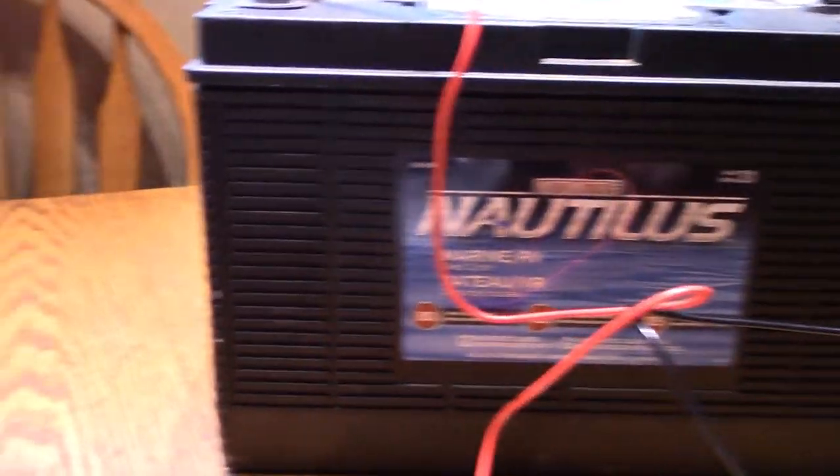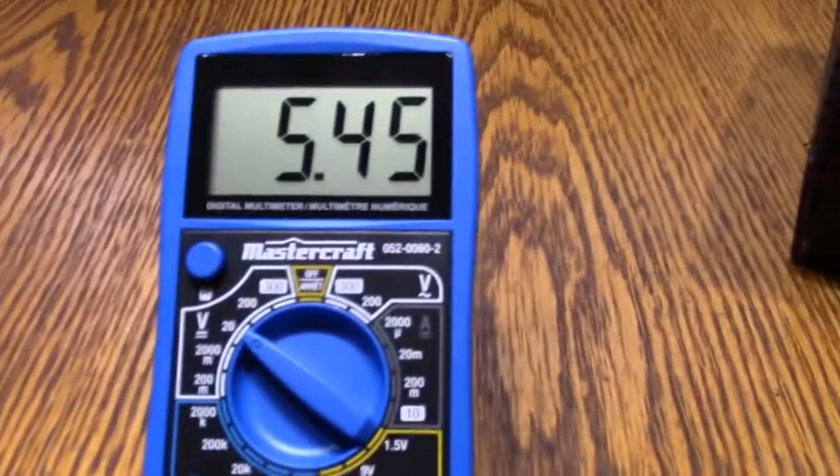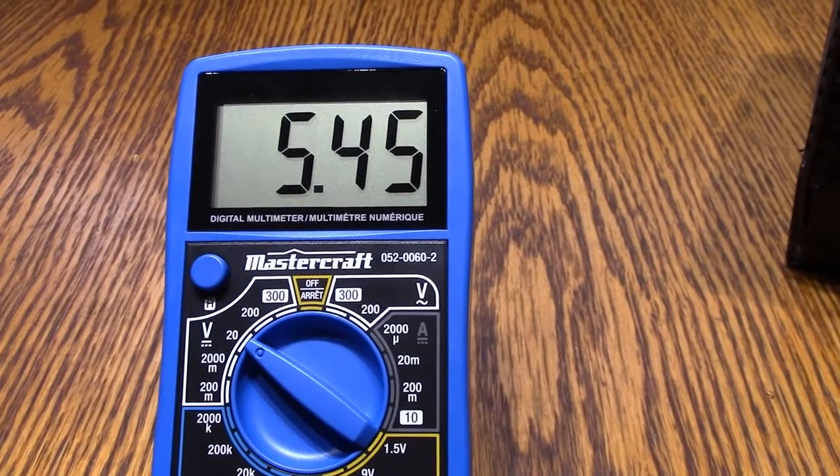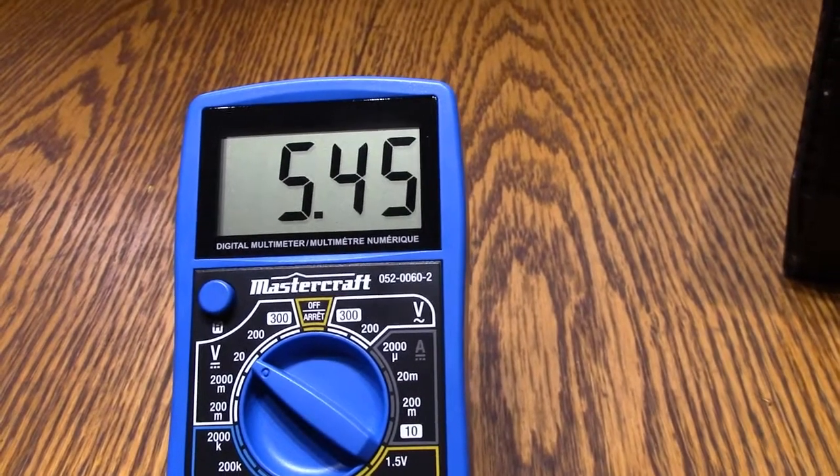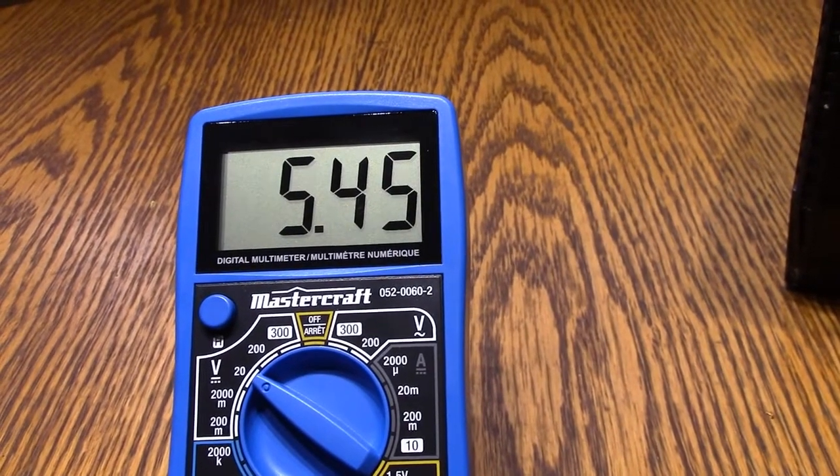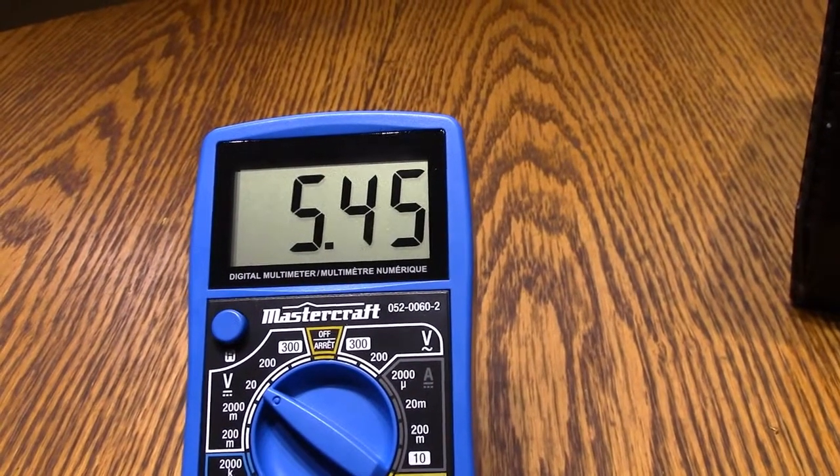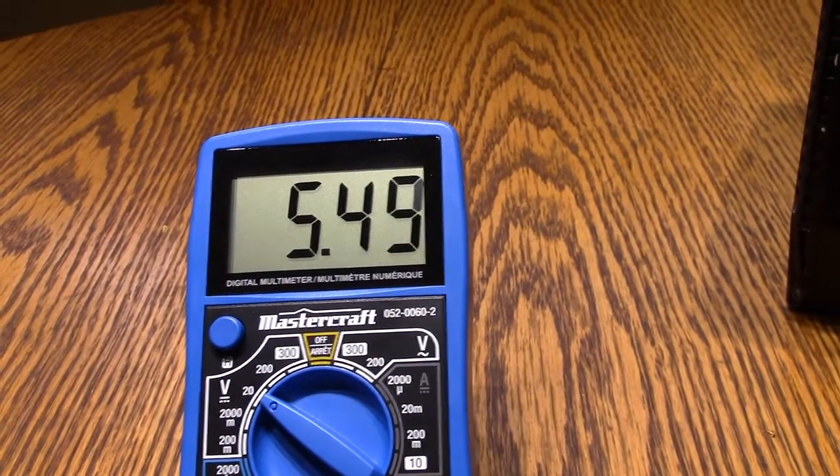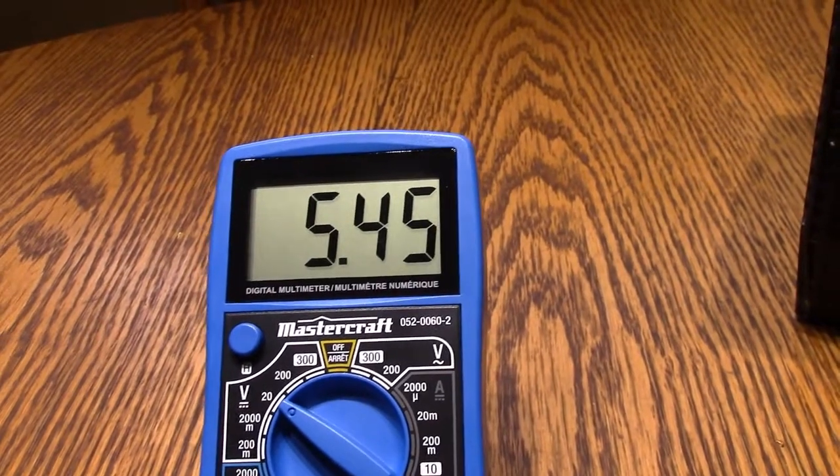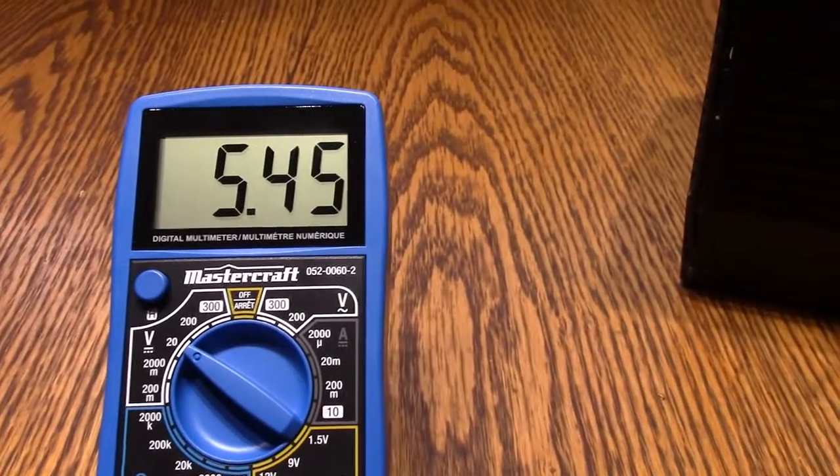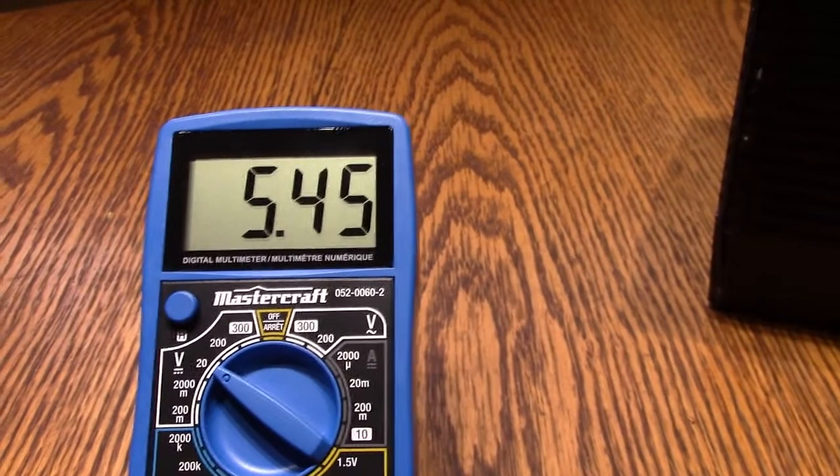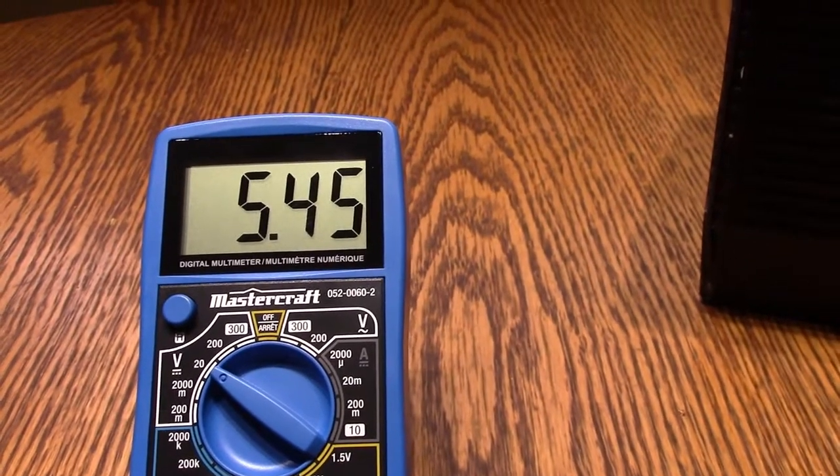But this is a very important test because a battery with 5.54 volts will never start your bike. The voltage is too low to hold the starting relay contacts in place, so the bike will not start. If you were, for example, to turn on the ignition switch, then hit the start switch, nothing would happen. You might hear a little click out of the starting relay, but that's it.